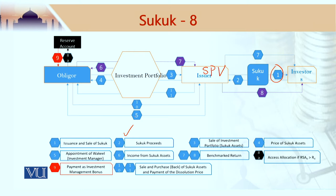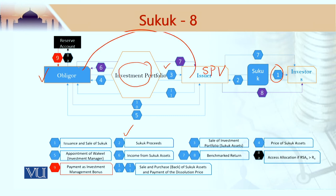This money is then used — in step number 3 — to buy an investment portfolio from the obligor. This is the sale of the investment portfolio, which becomes the sukuk assets, from the obligor to the issuer. The obligor is looking for more money, so the price of the sukuk asset flows from the issuer to the obligor, which is the main objective of structuring and issuing this sukuk.